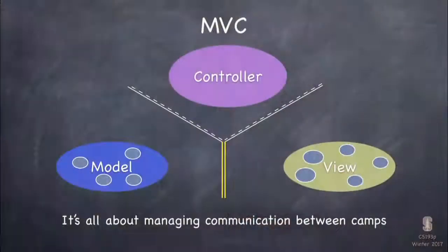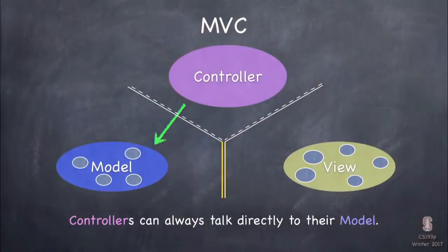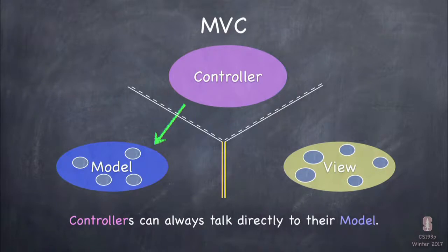The key to making MVC work is managing communication between these camps. If we don't manage that communication, we might as well just put them all in one big camp. Using a road sign imagery to visualize what's allowed: the controller talking to the model is a green arrow — it can say anything the model publicly allows, because it's the controller's job to get the model onto screen. There's no restriction on the controller talking to the model.